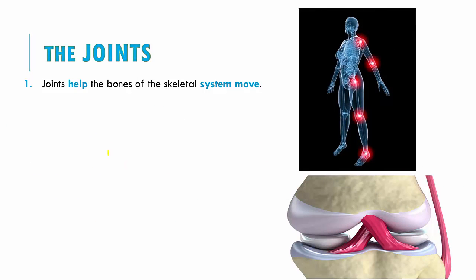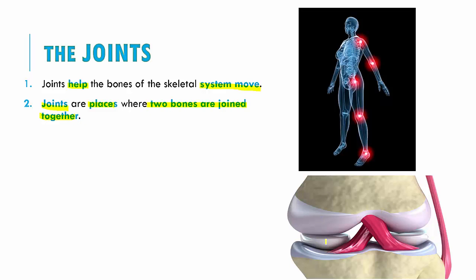So what are joints? Joints firstly help the bones of the skeletal system to move. It's because of these joints that we are able to move the different parts of our body. Joints are nothing but places where two bones are joined together. If you see this image, these two bones are joining here, and this region is called the joint.